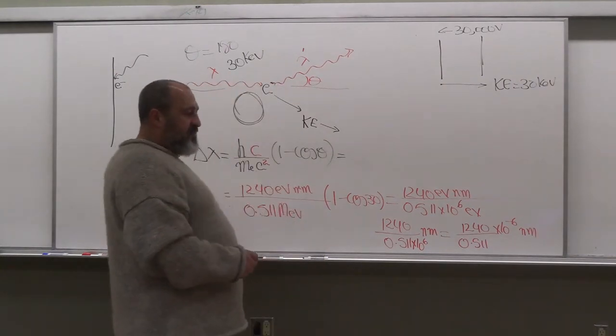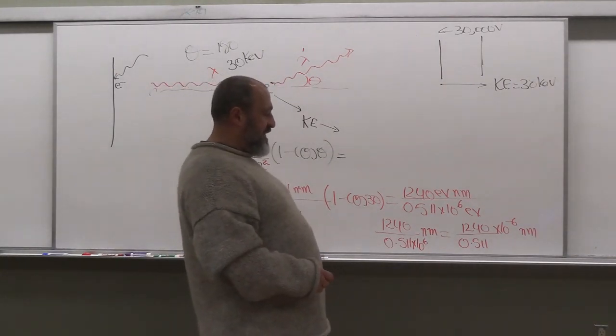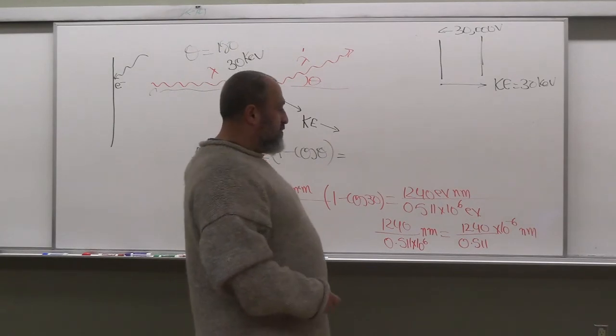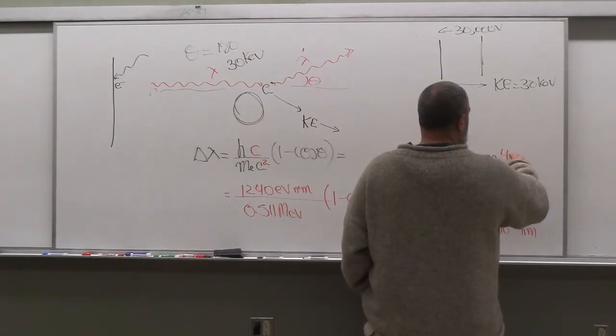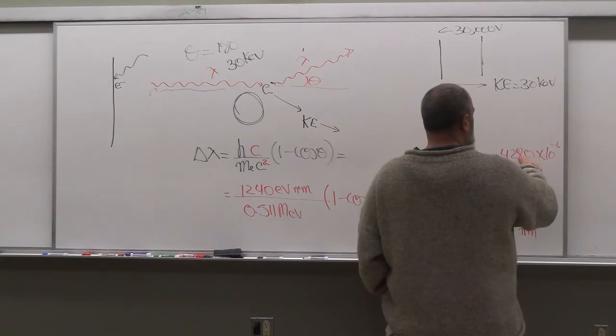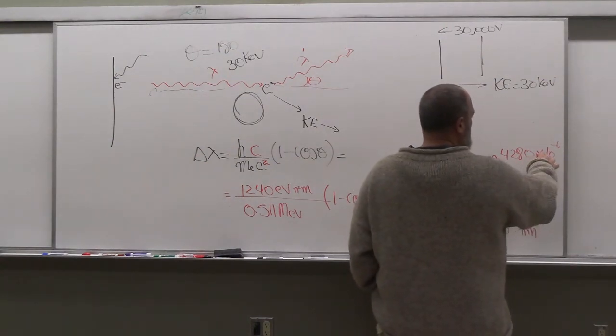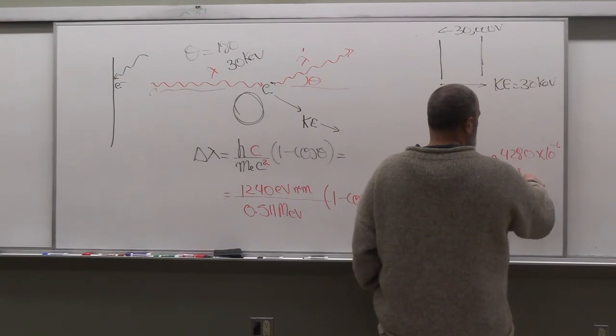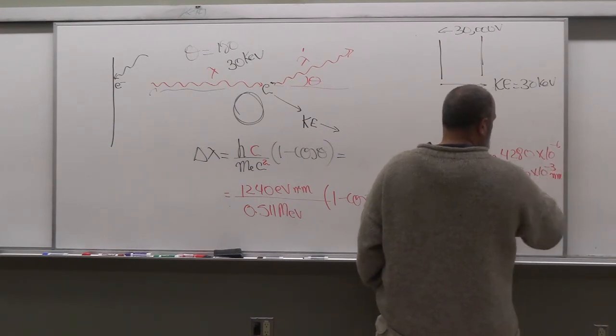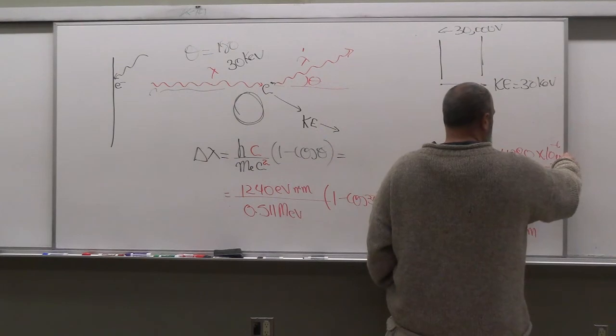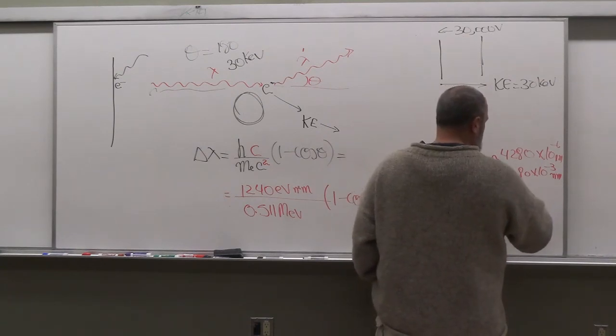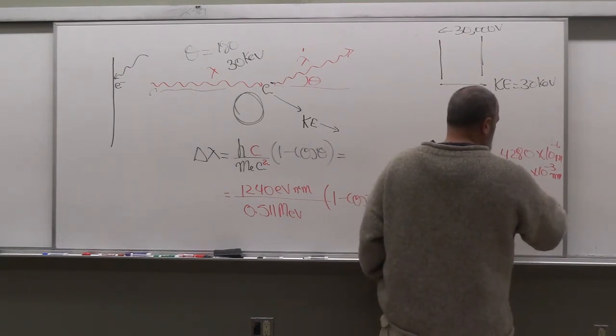So the answer, you can report the answer in picometers. When you calculate this, this is going to be close to 4280 times 10 to the power minus 6. So approximately, please do the calculation, 4280 times 10 to the power minus 6. This is approximate. So this is 4.280 times 10 to the power minus 3 nanometers. So that is nanometers. Remember, the units here are for this system nanometers. So that is actually about 4.28, a bit less than that, picometers.